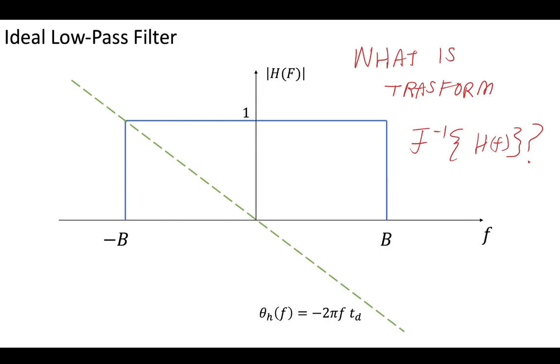So in the frequency domain, it's easy to deal with this ideal low-pass filter because it basically looks like this brick or block, where across the band of interest, we see no amplitude change. Everything passes through, it's not distorted, it stays constant at 1.